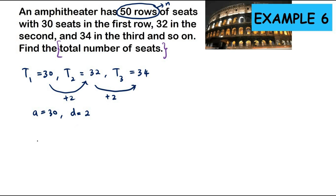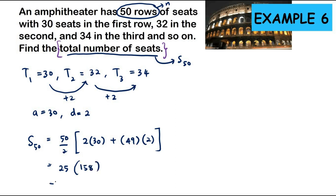So now we should know that our a is 30, our d is 2. We want to find the total number of seats means we want to find S50 up until the 50th row, how many seats all together. So we want to find S50, the formula should be 50 over 2 in the bracket 2 times a plus with 49 because n minus 1 times by d. So all together that should be 25 times 158, so the final answer should be 3950. All together such a big amphitheater.